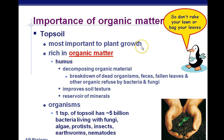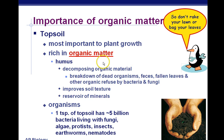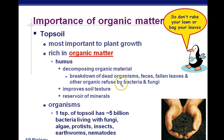Topsoil is the most important layer for plant growth. In the 1930s, we had the topsoil blown off by dust storms, and we lost that rich organic material. The stuff underneath is not as good for growing. Rich organic matter in topsoil has a name: humus. Humus is decomposing organic material rich in dead organisms, feces, fallen leaves, and other organic refuse, being broken down by bacteria and fungi.